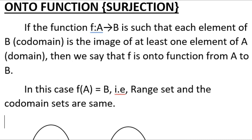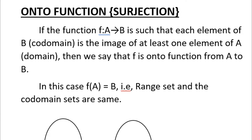If the function f maps A to B, the first set is known as the domain of the function, and the second set B is called the codomain of the function f. The definition is: if the function f maps A to B such that each element of B is the image of at least one element of A, that is the domain, then we say that f is an onto function from A to B.